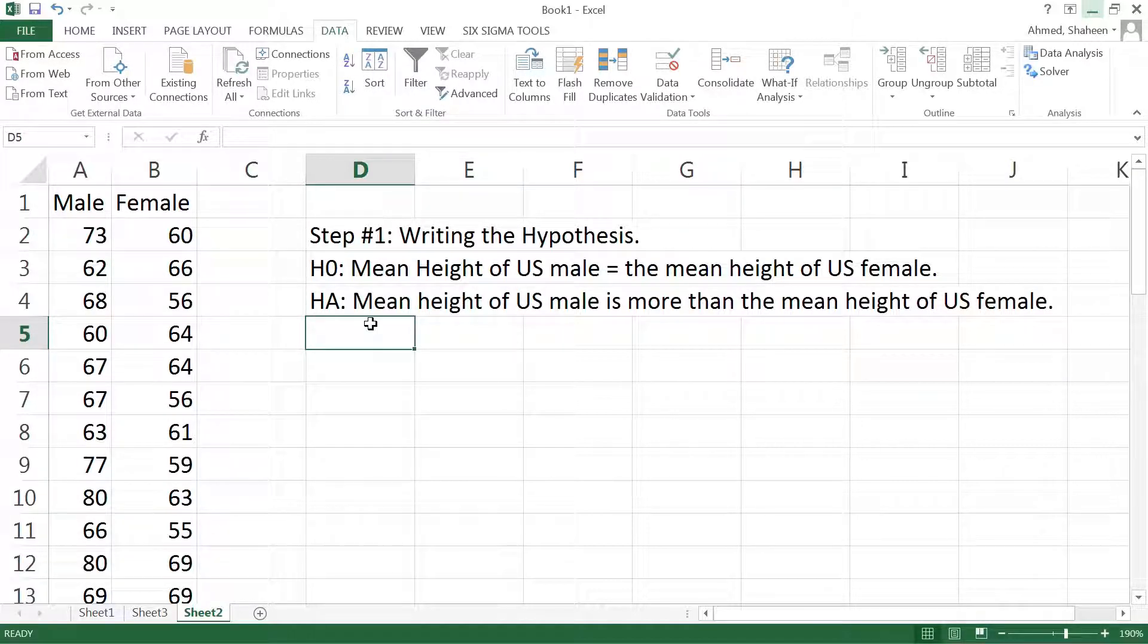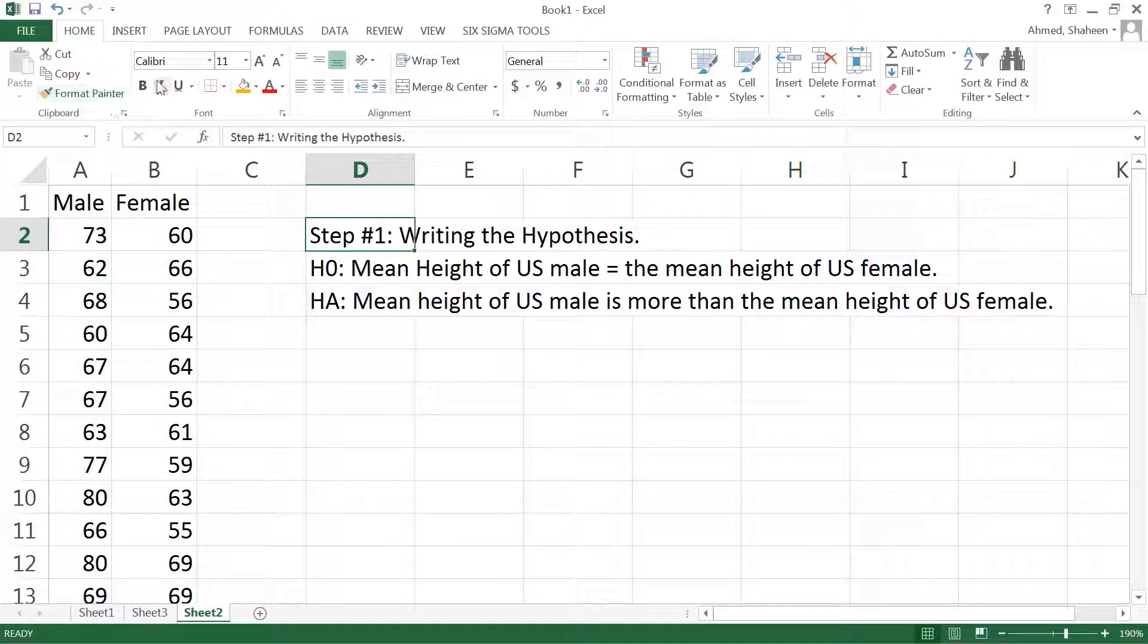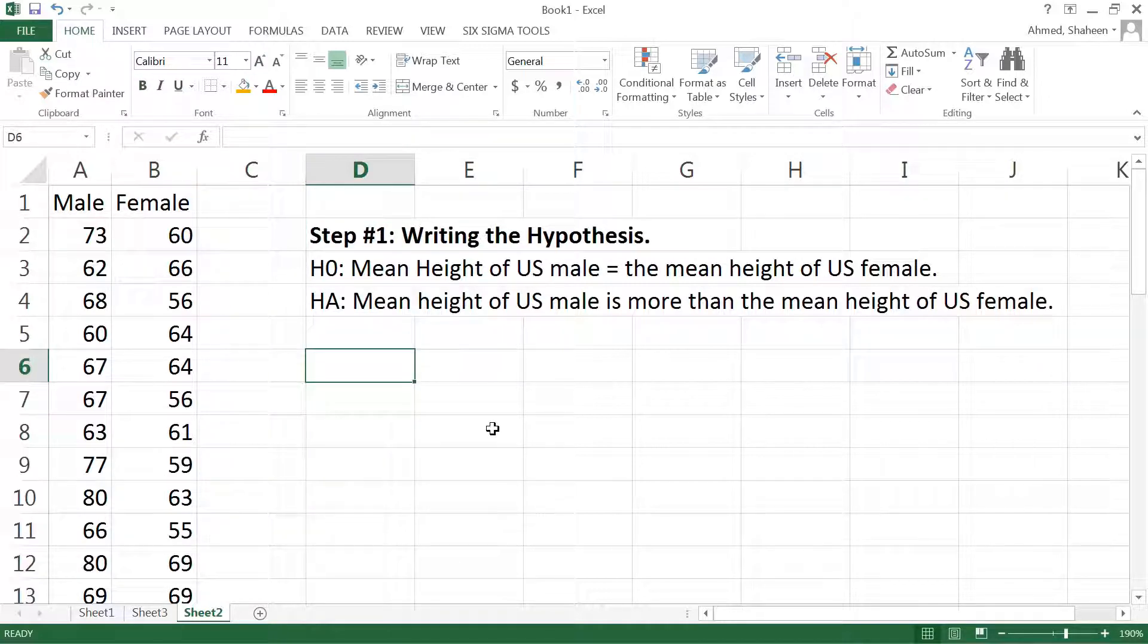We could write not equal like we did in some other cases. It depends on how much information we have about the situation. If we have more information and we know that male is taller, we can say yes, the mean male height will be more than the mean female height. So we can go a little bit further in our hypothesis writing so that we can have a better conclusion.